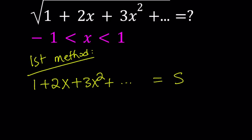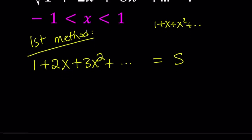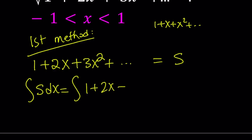I want to turn this into something I can handle. If you remember, we have the famous geometric series 1 plus x plus x squared dot dot dot — the infinite version. I'm going to integrate both sides. The integral of S dx is going to be the integral of 1 plus 2x plus 3x squared, integrated term by term dx.